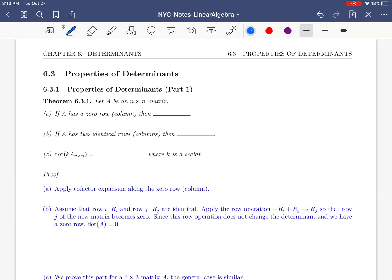Theorem 6.3.1: Let A be an n-by-n matrix. The first property says if A has a zero row or a zero column, then the determinant of A is 0.